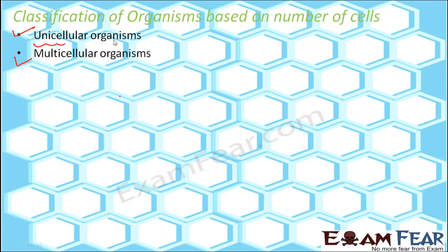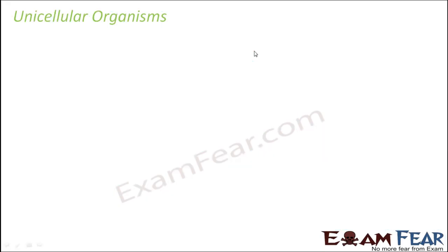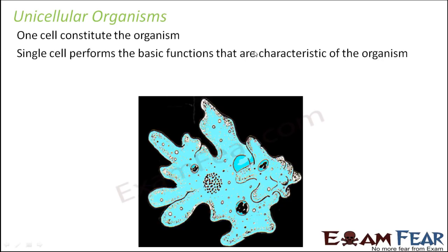Unicellular organisms are made up of one cell, and multicellular organisms are made up of many cells. In unicellular organisms, one cell constitutes the entire organism. All life processes — whether digestion, excretion, or respiration — are taken care of by this one cell. How to get food, how to digest the food, how to absorb the food — everything is done by that single cell. One such example is amoeba.